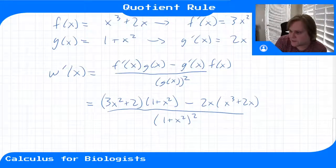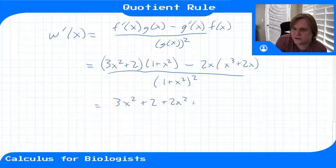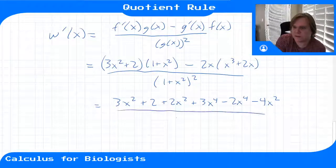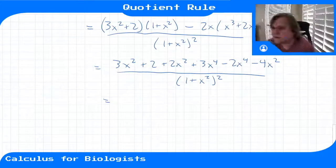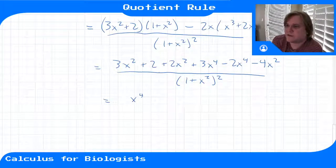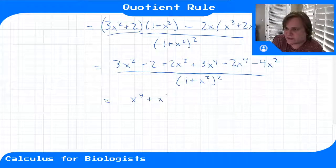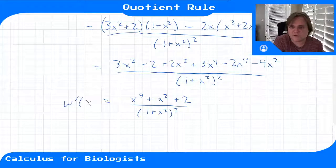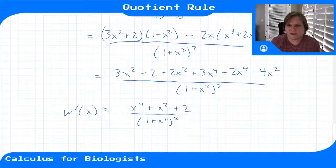Expanding the top: three x squared plus two times one plus x squared gives three x to the fourth plus three x squared plus two x squared plus two, and minus two x times x cubed plus two x gives minus two x to the fourth minus four x squared. Combining terms: three x to the fourth minus two x to the fourth gives x to the fourth; three x squared plus two x squared minus four x squared gives x squared; plus two. So the derivative is x to the fourth plus x squared plus two over one plus x squared squared.